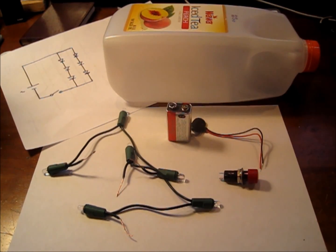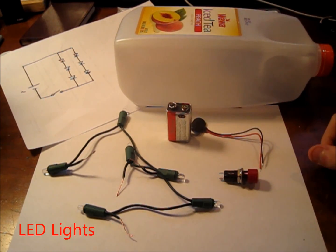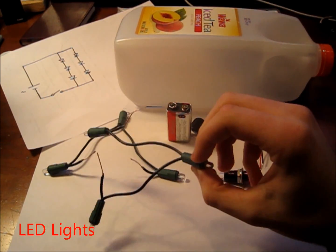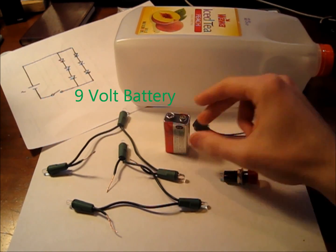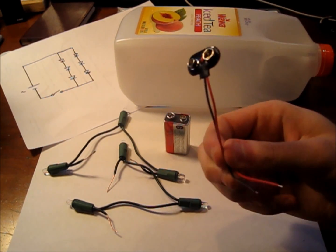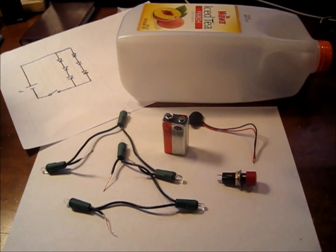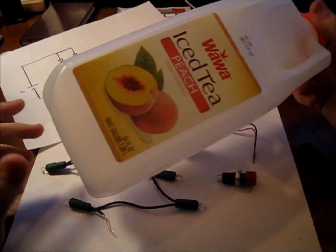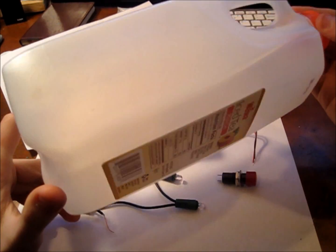Alright, so you only need a couple things for this project. A half-gallon container like this one here, some LED lights - I used some extra Christmas lights that I just had laying around the house, a 9-volt battery with a connector (helpful but not necessary), and some printer paper and tape. The first thing we're going to do is rinse out the container and let it dry. I also suggest taking off the labels to let the light shine through a little bit better.